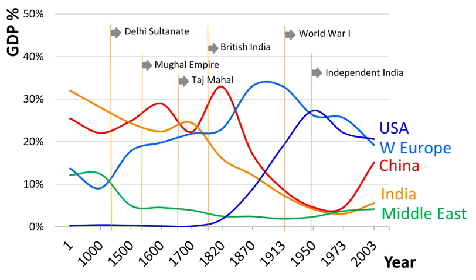The Mesolithic period began with the end of the last glacial period over 10,000 years ago, involving the gradual domestication of plants and animals and the formation of settled communities at various times and places.